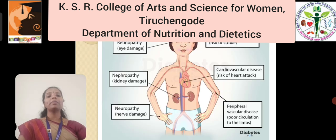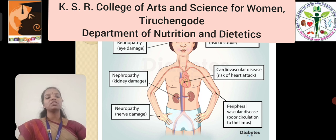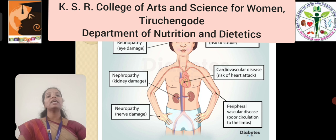There are two major complications: microvascular complications and macrovascular complications. Microvascular complications involve small vessels such as capillaries, whereas macrovascular complications involve large vessels such as arteries and veins. The three main complications found in microvascular disease are retinopathy, which is damage to the eye; nephropathy, which is damage to the kidney; and neuropathy, which is damage to the nerve.